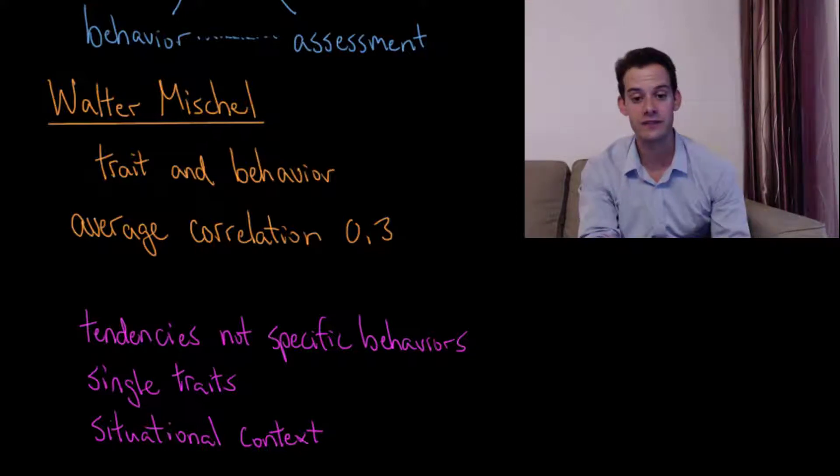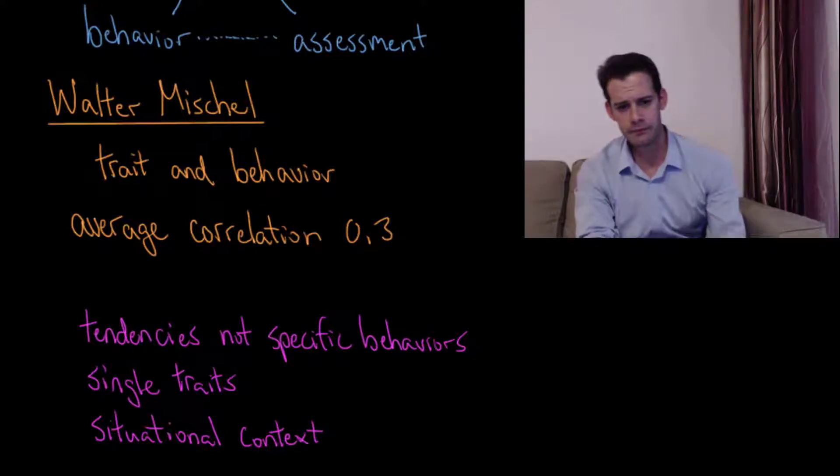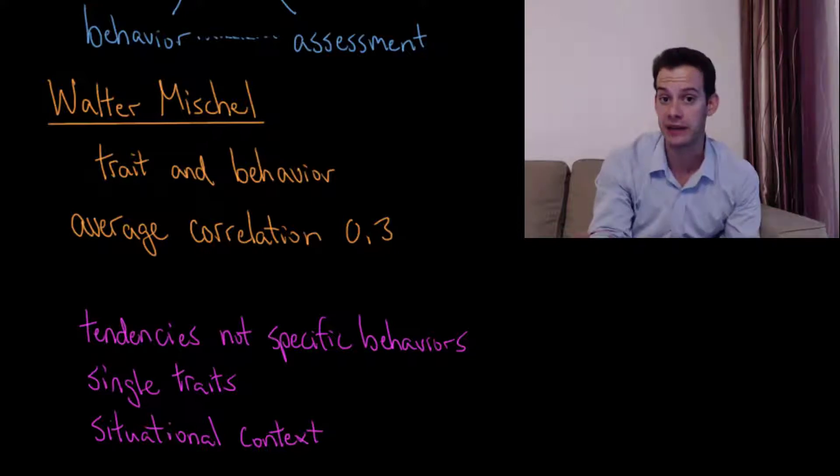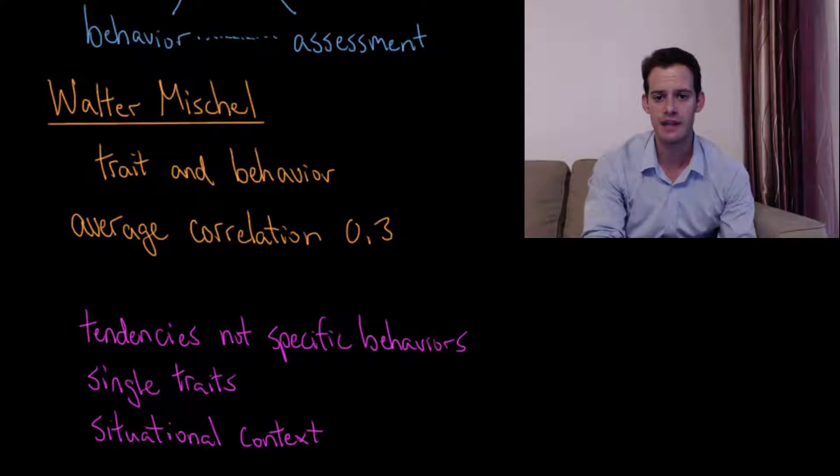And then lastly, we have the idea that the situation also matters. There's a situational context, and that's not being taken into consideration here. So just because you're very extroverted doesn't mean that you're always going to be around other people. You might still want to be alone sometimes, even if you're very high in extroversion. And that's because there's certain situations where you might feel the need to be alone, regardless of how extroverted you are. And so that would mean that, again, it wouldn't perfectly predict your behavior. So we should keep this in mind. It doesn't mean just because we have a lower correlation here that assessing personality traits is useless.